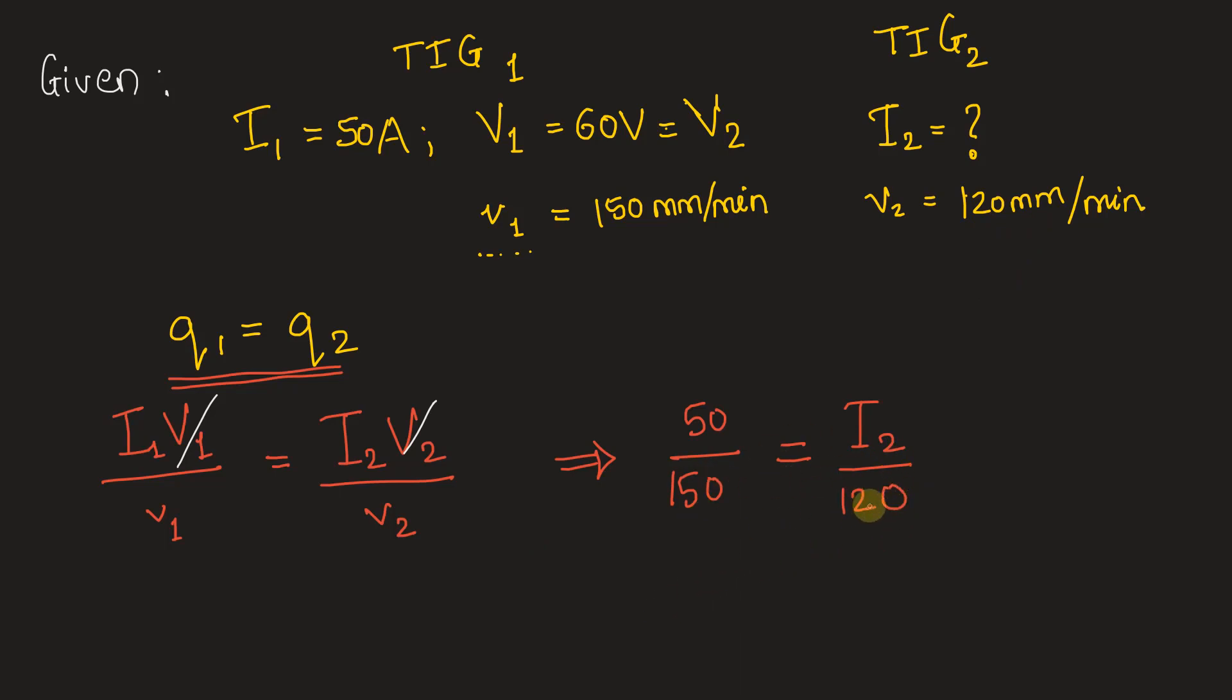We will keep the units as is because these are ratios, and we will get the unit of current as ampere. By rearranging, we get I₂ = (50 × 120)/150 = 40 ampere.